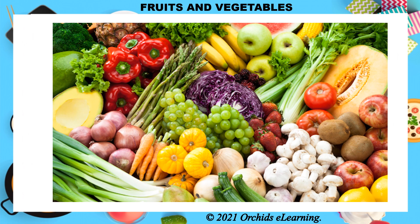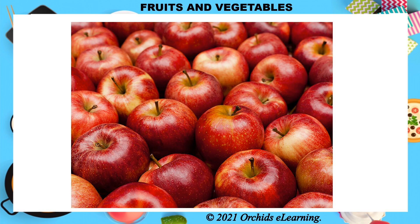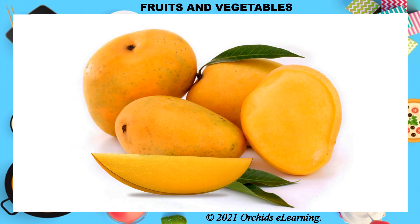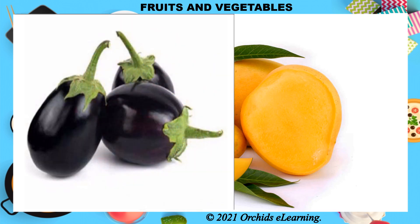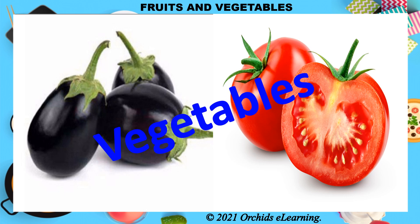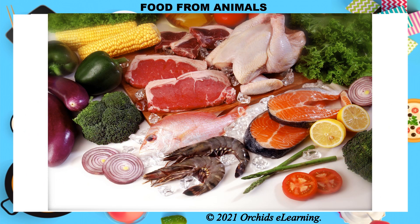Plants also provide us with fruits and vegetables. Apple, banana, and mango are common fruits. There are other fruits such as brinjal and tomato which are eaten either cooked or raw and are termed as vegetables. Now let us learn about the food we get from animals — animal products such as meat.